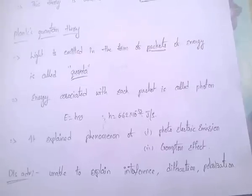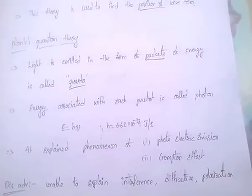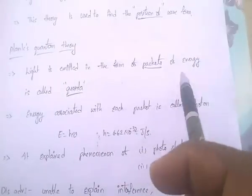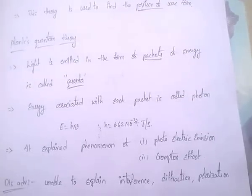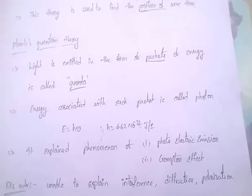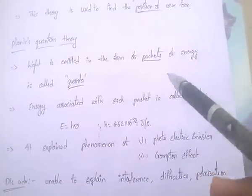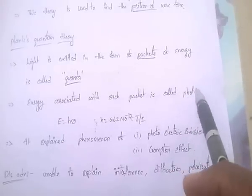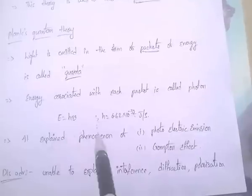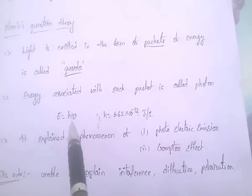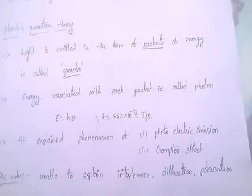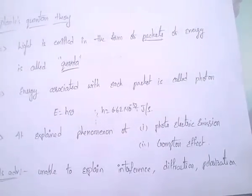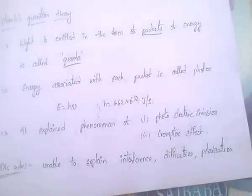Next theory is Planck's quantum theory. According to this theory, light is emitted in the form of packets of energy, and these packets of energy are called quanta. The energy associated with each packet is called a photon, and E equal to H nu. Here H is Planck's constant, H equal to 6.62 into 10 power minus 32 Joule per second. Very, very important.